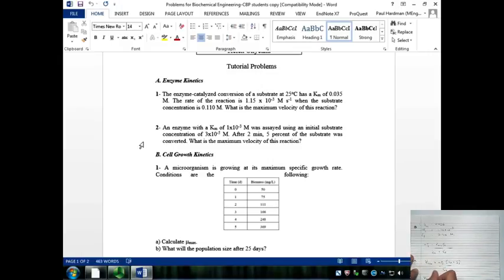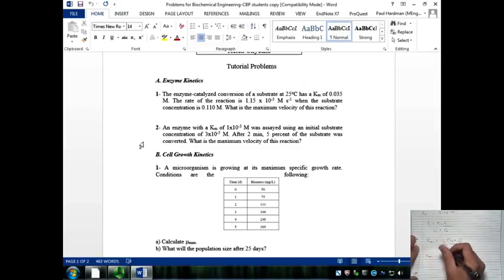And we can then substitute these values into this equation. So Vmax is equal to 1.15 times 10 to the minus 3 times 0.035 plus 0.110 over 0.110, the substrate concentration. And we can calculate then Vmax to be equal to 1.52 times 10 to the minus 3 molar per second.